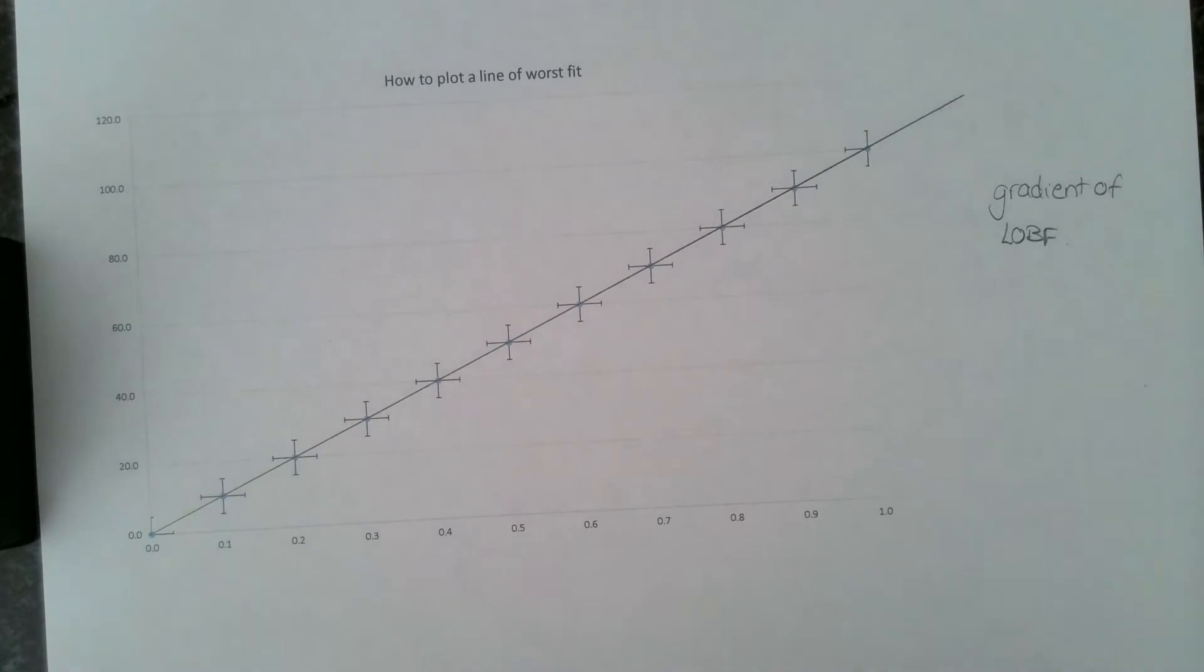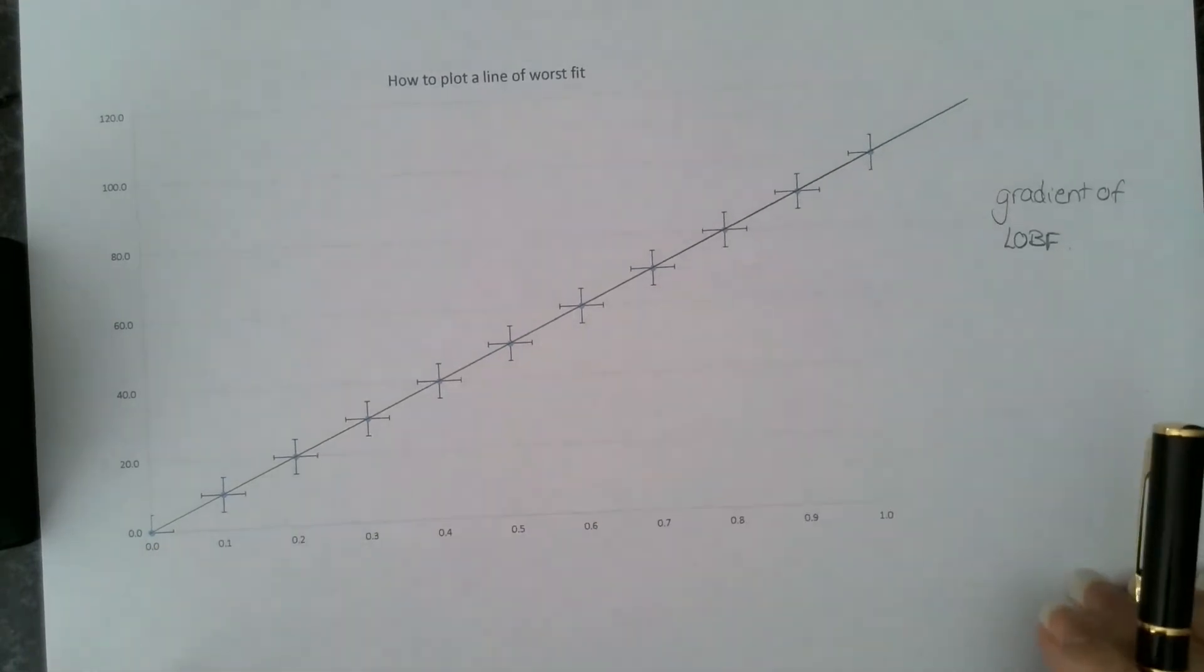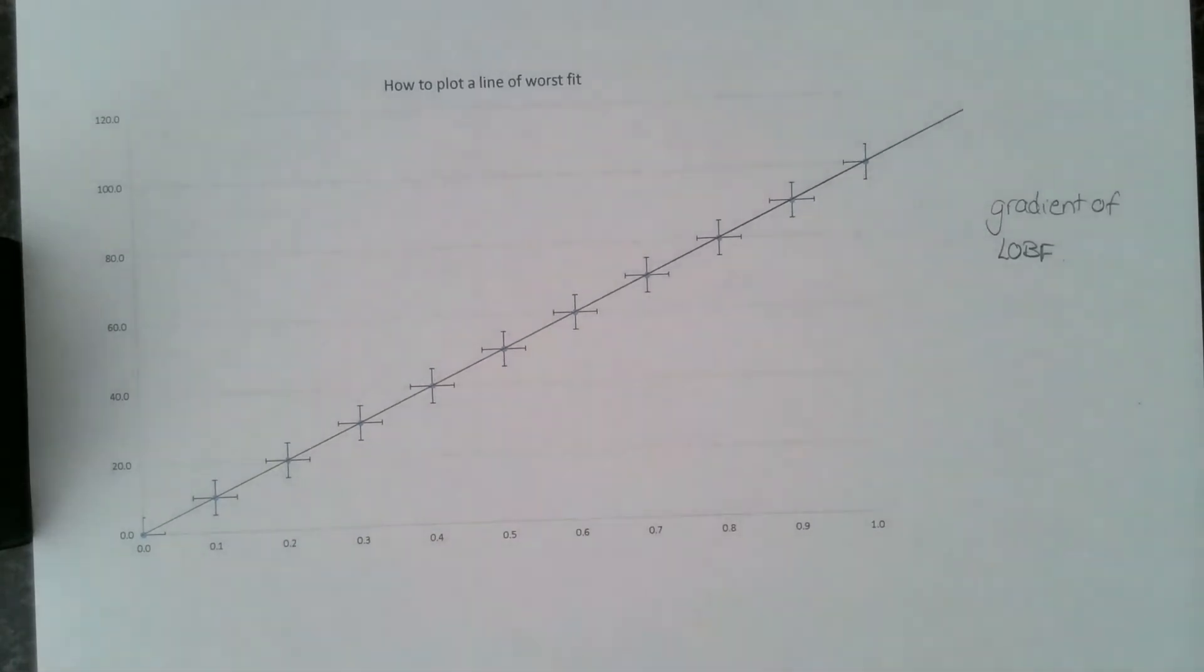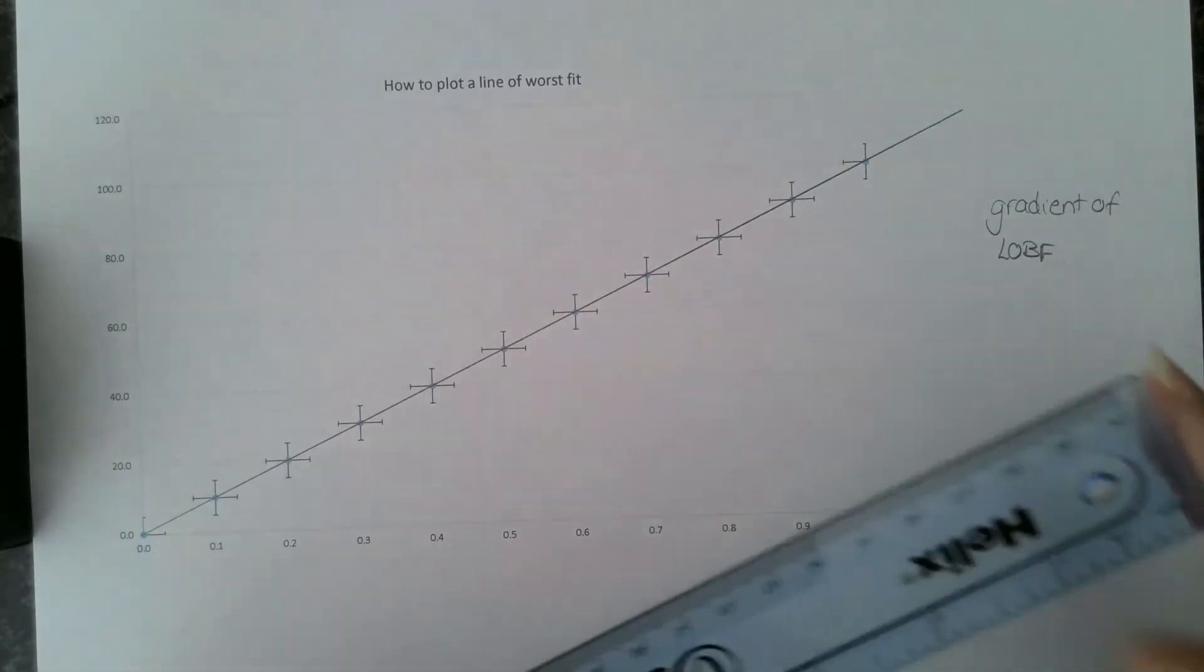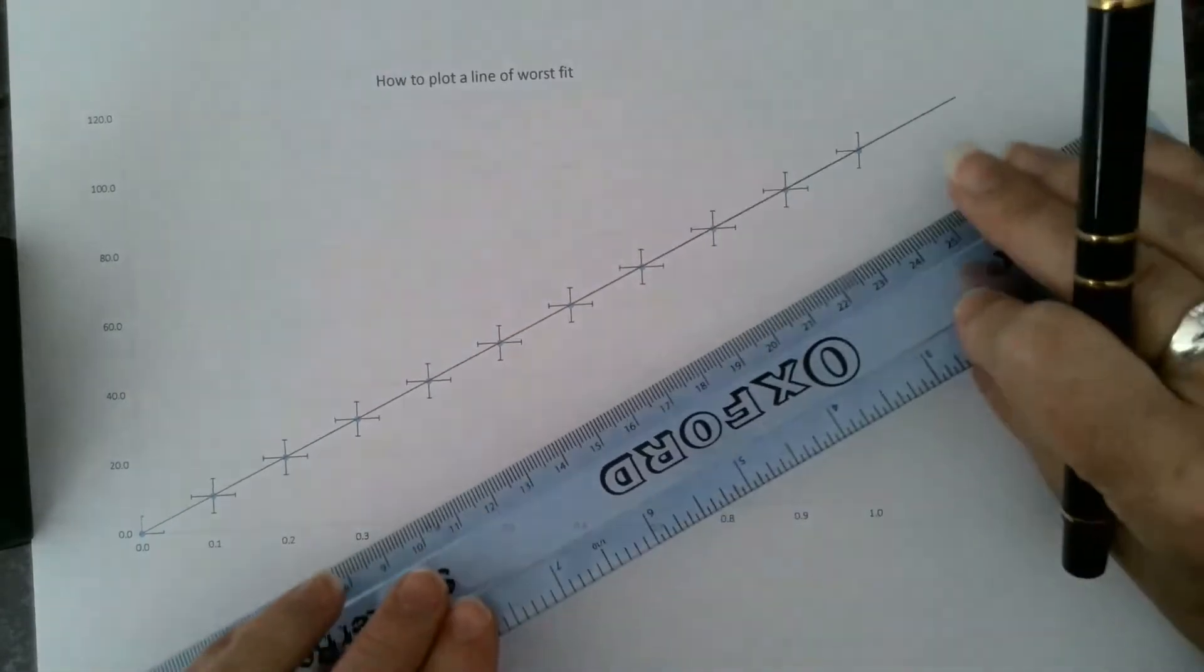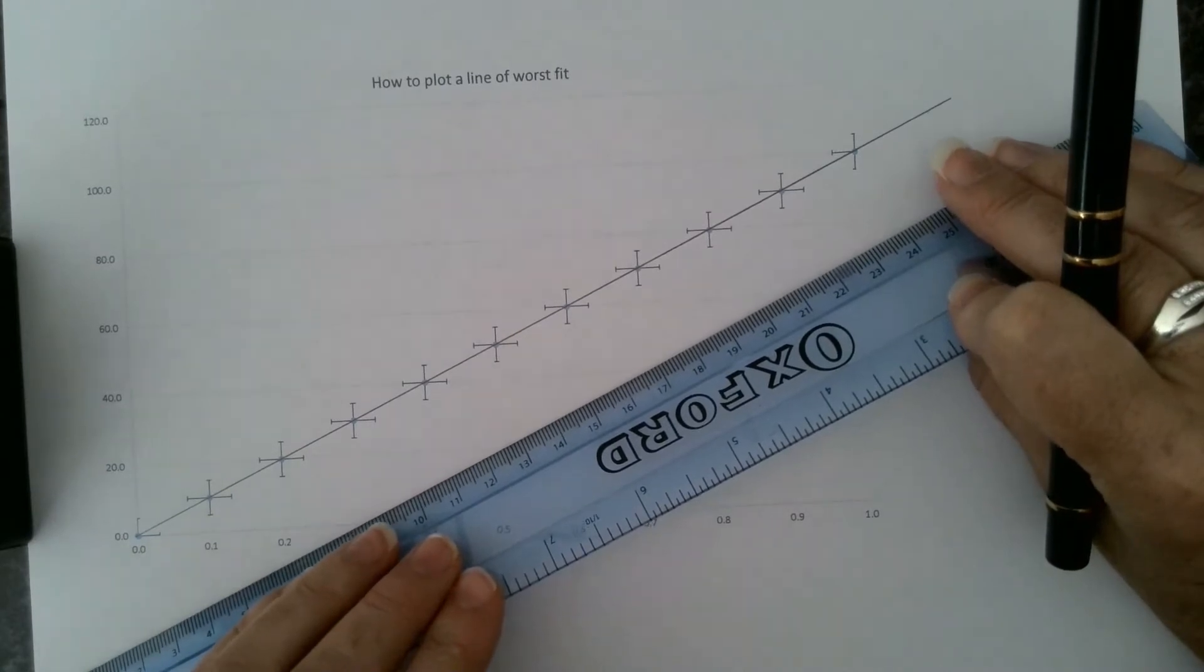Plotting a line of best fit is fairly straightforward. It goes through as many of the points as possible. Because my data is fictitious, it's a lovely straight line with no anomalous points. But how do I plot my line of worst fit?